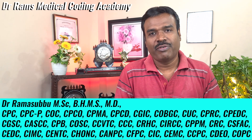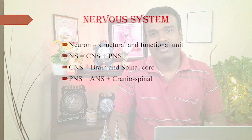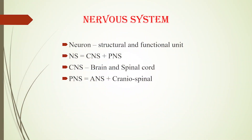Talking about the nervous system, by the word itself we understand this system is going to involve the nerve. A nerve is also called a neuron, which is the structural and functional unit of the nervous system. For classification: NS = CNS + PNS. NS is nervous system, CNS is central nervous system, and PNS is peripheral nervous system. The central nervous system includes the brain and spinal cord. The peripheral nervous system has further classifications like the autonomic and somatic nervous systems — remember this as PAS: P for peripheral, A for autonomic, S for somatic.